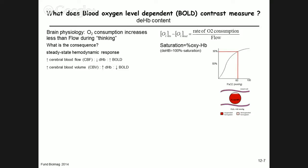There is also an effect on blood volume: if blood volume goes up, there is an increase in oxyhemoglobin and therefore a decrease in BOLD signal — a competing effect — but blood flow dominates. In essence, in functional MRI the signal is related to change in blood flow, change in blood volume, and change in oxygen consumption.